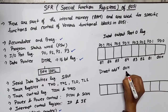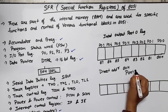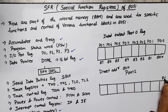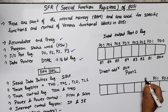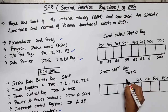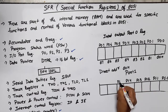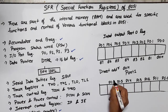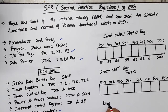This is input/output Port 1. The bits are: P1.0, P1.1, P1.2, P1.3, P1.4, P1.5, P1.6, and P1.7. The direct address of Port 1 is 90h.